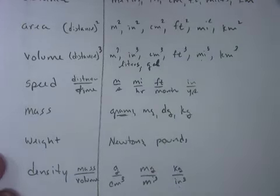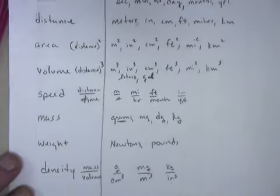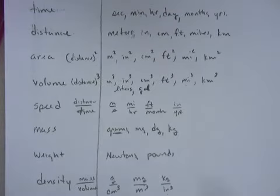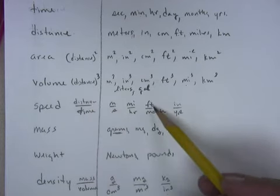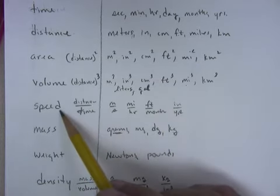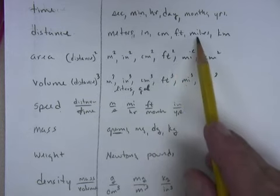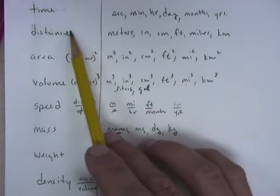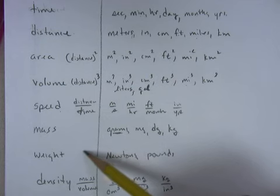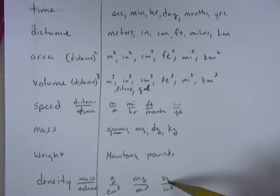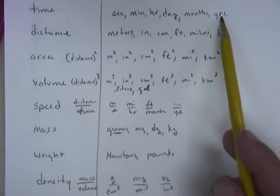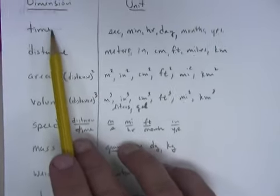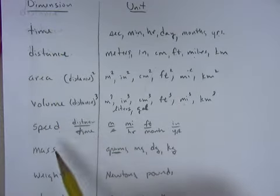So let's practice. Let's see what you could do with these. So if I were to say feet cubed, you would say volume. If I said foot per month, that would be speed. If I said miles, that would be distance. If I said pounds, that would be weight. If I said kilograms per cubic inch, that would be density. If I said years, that would be time. So these are all units and these are all dimensions.